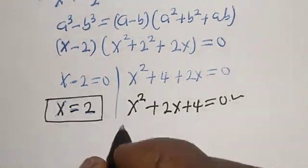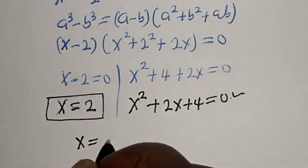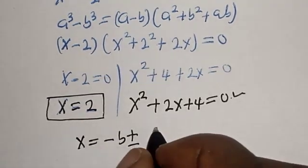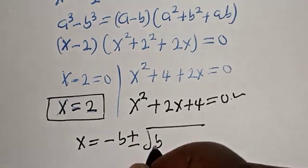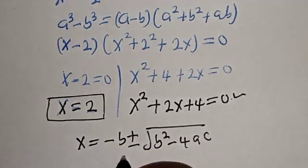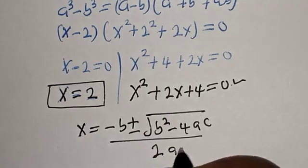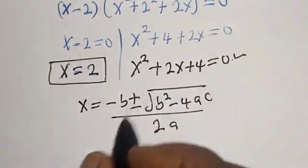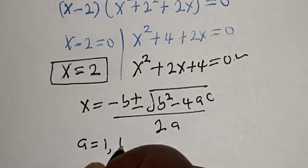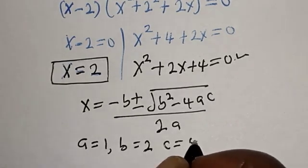Our quadratic formula gives us s is equal to minus b plus or minus square root of b squared minus 4ac, divided by 2a. From the equation s squared plus 2s plus 4 equals 0, we identify a is equal to 1, b is equal to 2, c is equal to 4.